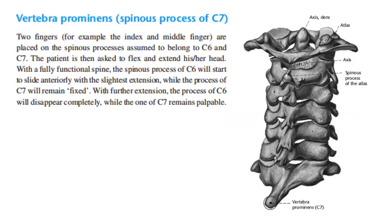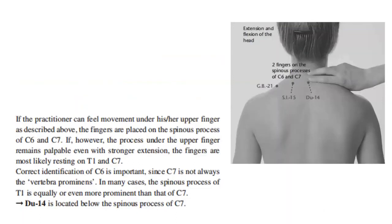Vertebra prominens — spinous process of C7: two fingers, for example the index and middle finger, are placed on the spinous processes assumed to belong to C6 and C7. The patient is then asked to flex and extend his head. With a fully functional spine, the spinous process of C6 will start to slide anteriorly with the slightest extension, while the process of C7 will remain fixed. With further extension, the process of C6 will disappear completely, while the one of C7 remains palpable. If the practitioner can feel movement under his upper finger, the fingers are placed on the spinous process of C6 and C7.